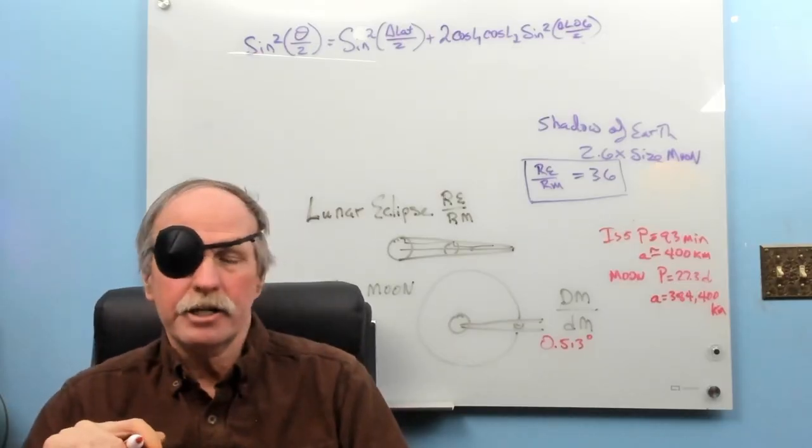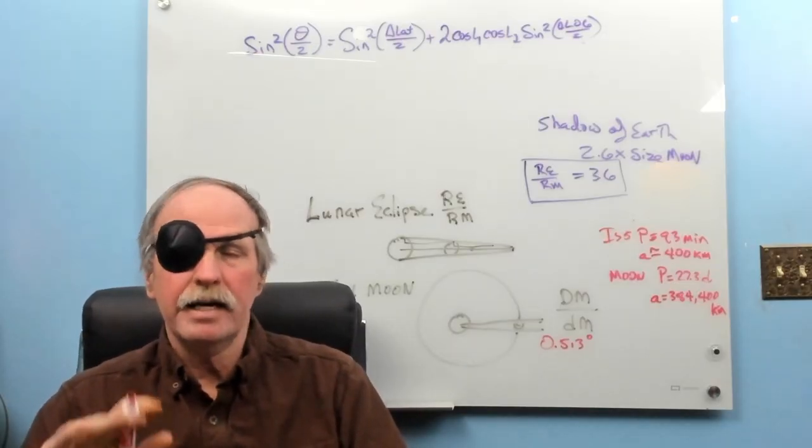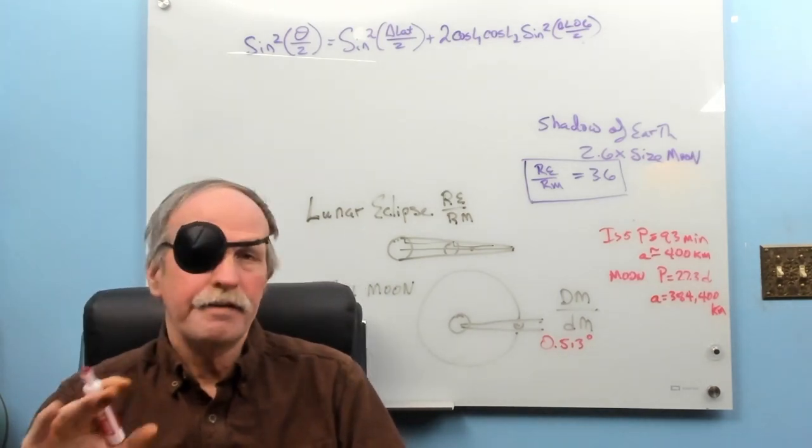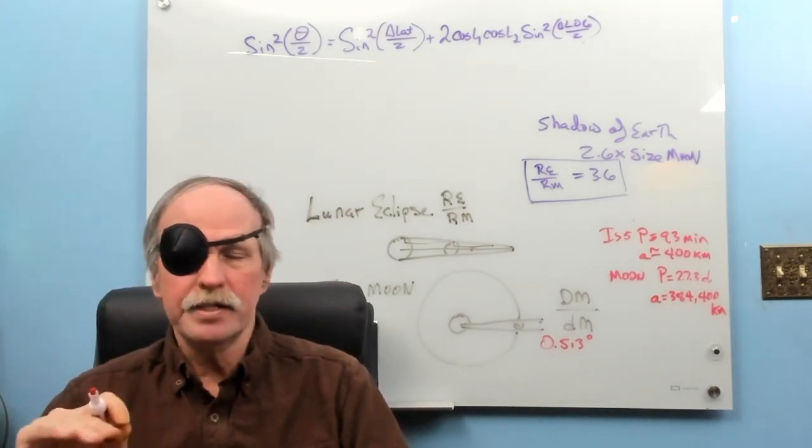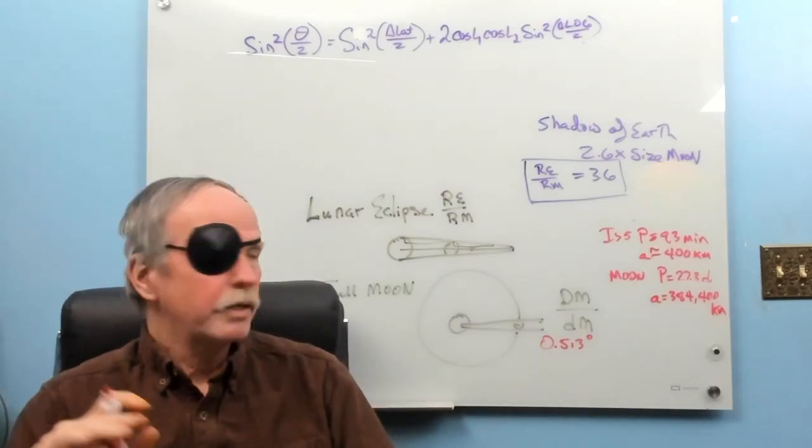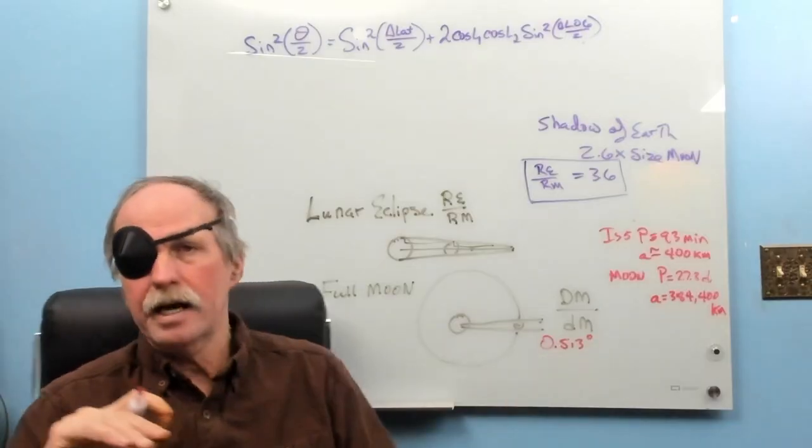Next he was able to look at the full moon and look at the angular size of the moon which is 0.513 degrees. And as a result he was able to relate the diameter of the moon to the distance from the earth to the moon. If you would like to see the actual mathematics behind all of that, have a look at the two videos. I've linked them in the description.